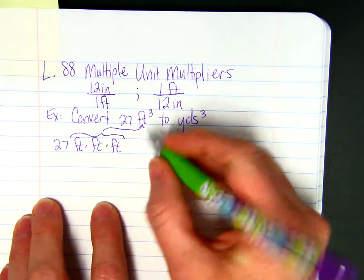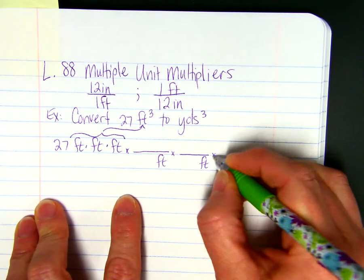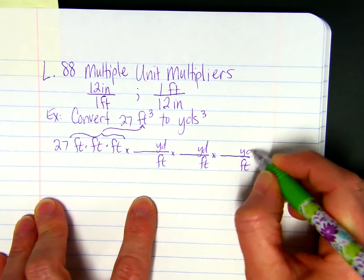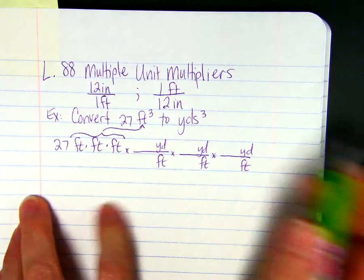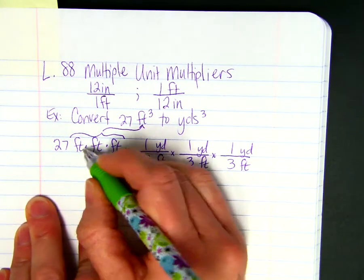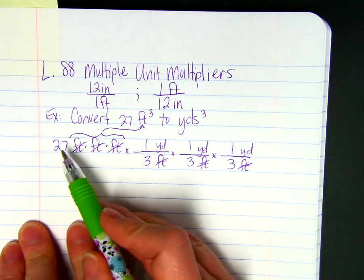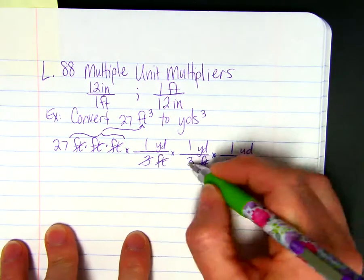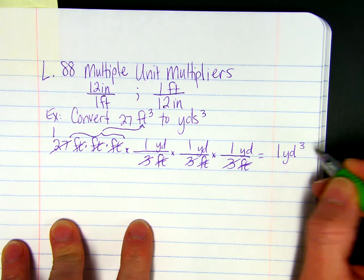So we need three unit multipliers so that we can cancel all three of those units. We put the unit of feet in the denominator, yards in the numerator, that way we can cancel all three of those. There's three feet in one yard, so we cancel. And we have to divide 27 by 3 times 3 times 3, which is 27. 27 divided by 27 is 1, so this would equal 1 yard cubed.